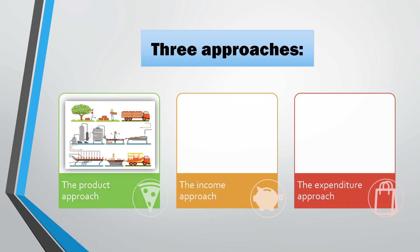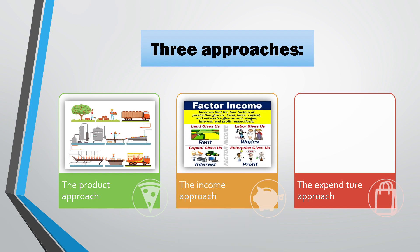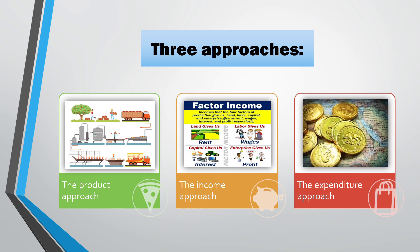Three approaches of measuring national income are the product approach, the income approach, and the expenditure approach. Any of the three approaches can be adopted to measure GDP of a country provided required data is fully available. Where a single method can't be adopted due to non-availability of data or due to conceptual problems as to what should and should not be included in national income accounting, a combination of the three methods is used to measure GDP. Now let's discuss each method in detail.